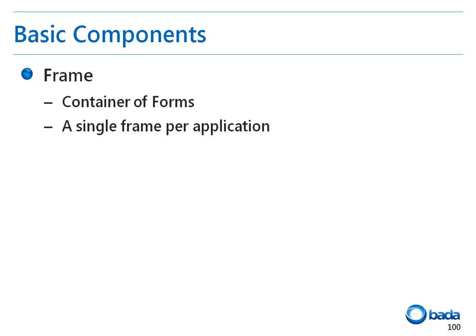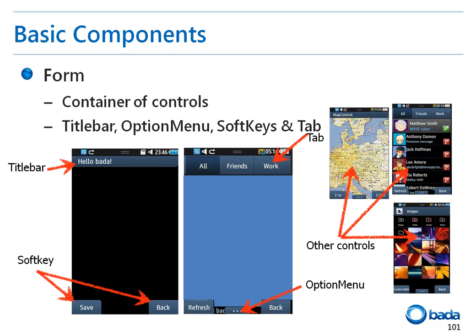Let's have a look at each of these components. First, as I've mentioned, a frame is a window that is automatically generated for each application. The major role of a frame is to contain and show a form on the screen. A form is basically a unit to manage the screens that appear one at a time. The important feature of a form is that it can be configured according to your needs using the optional title bar, option menu, soft key, and tab controls. The major role of a form is to contain and manage other detailed controls.